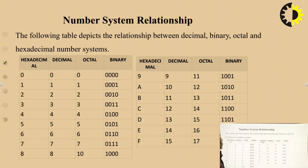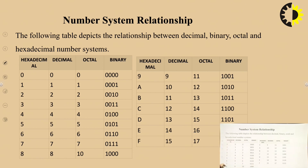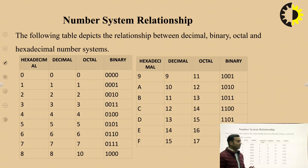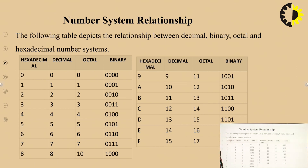Now let us look at the number system relationship table. In hexadecimal the digits are 0–9, then A, B, C, D, E, F. Their decimal equivalents are 0–9, then 10, 11, 12, 13, 14, 15. In octal, from 0 to 7 the values are the same as decimal. After 7, there is no digit 8 in octal, so 8 becomes 10 in octal, then 11, 12, 13, 14, 15, 16, 17, then 20, 21, and so on.